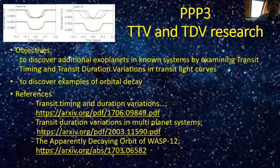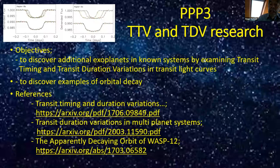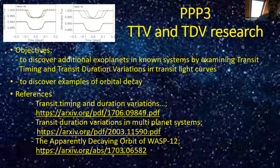TTVs and TDVs. The objective is to discover additional exoplanets in known systems by searching for transit timing and duration variations in transit light curves, and also to discover examples of orbital decay, which indicate the planet is migrating inwards towards its host star. So variations don't always indicate there's another planet in the system — it might just be that the planet we're observing is migrating inwards due to some friction with the protoplanetary disk, for example.